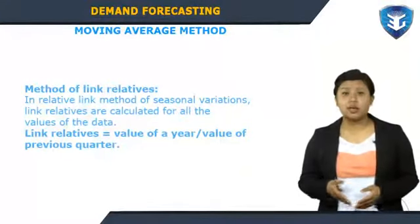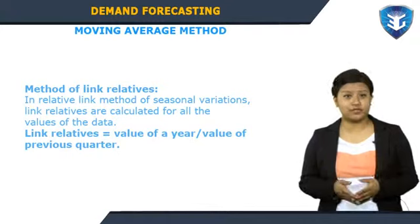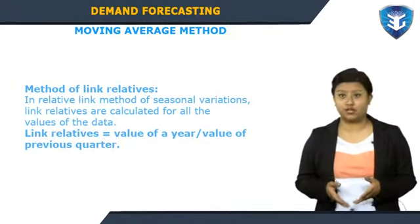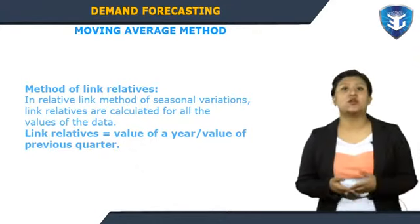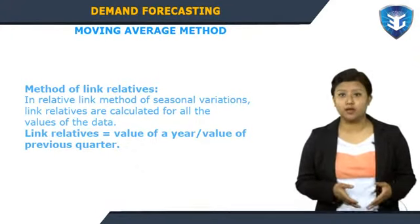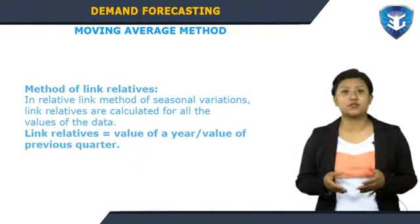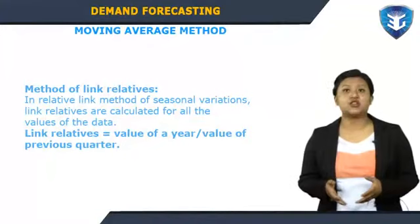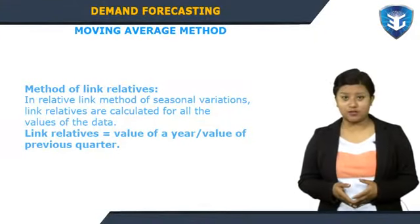The method of link relatives: in this method of seasonal variations, link relatives are calculated for all the values of the data. A link relative equals the value of a year divided by the value of the previous quarter. The sum of link relatives for each quarter or month is calculated, and the average of these totals is obtained by dividing by the total number of years. Chain indices are then calculated from these averages.